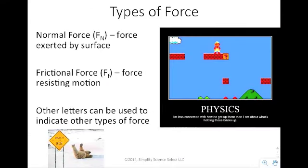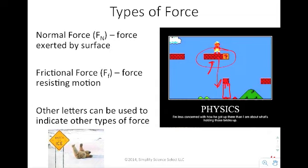Next, we have the normal force — the force exerted by the surface on something. If you have a brick in the air, it's going to fall to the ground. The reason why stacked bricks don't fall is because there's a normal force pushing them up. After that, we have the frictional force. You should be familiar with friction — if you take your hands and rub them together, that's an example of friction. Or if you allow a ball to roll in the grass, it comes to a stop because of friction.